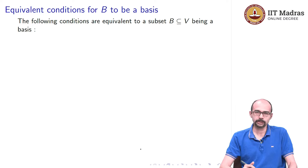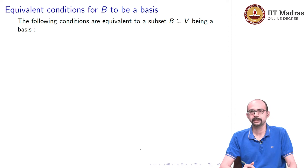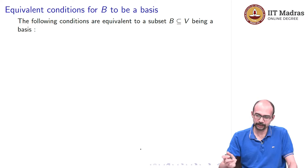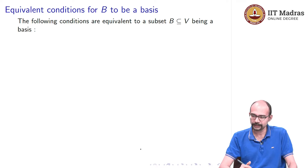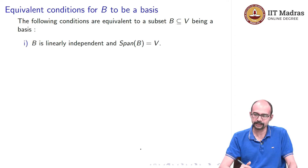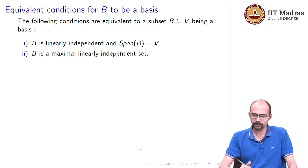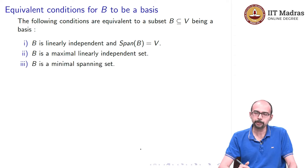Let us do a slightly theoretical statement. The following conditions are equivalent to a subset being a basis. If B is a basis, then these conditions are going to hold. On the other hand, if any of these conditions hold for a subset B, then it must be a basis. The conditions are: B is linearly independent and the span of B is V; B is a maximal linearly independent set; and B is a minimal spanning set.